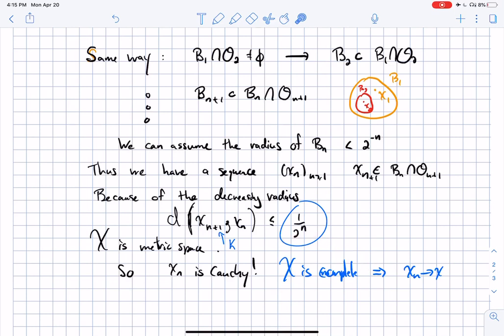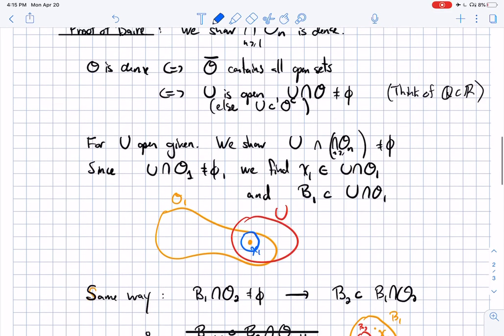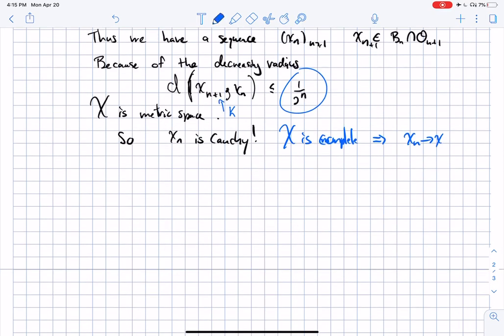You have the Xn is Cauchy in the end, the way you constructed those balls. Therefore, by the fact that X is complete—this is where you use the fact that X is complete—Xn must converge to an element X. All these sequences of balls are included in what you started with, U intersect O1, and so in every U and every On, X belongs to U intersect the intersection of the whole sequence. In particular, that means this is not empty.